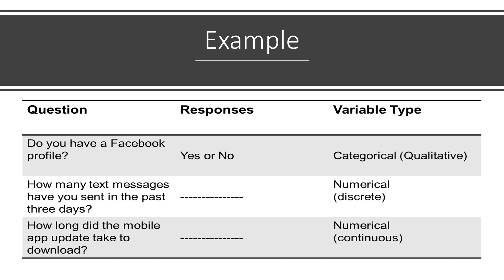Next: 'How many text messages have you sent in the past three days?' You cannot categorize the number of text messages sent, so this is a numerical discrete variable — discrete because it arises from counting. Last: 'How long did the mobile app update take to download?' Here we are measuring time, so this is a numerical continuous variable.